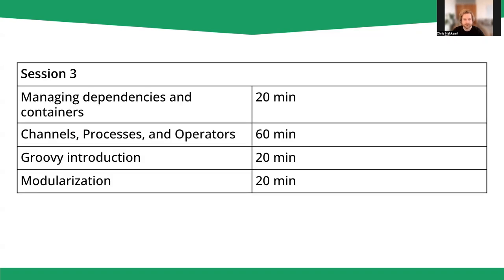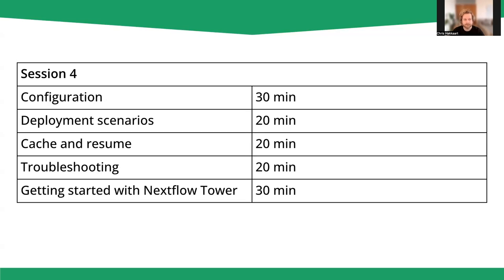In Session 3, we started to look at some of the things introduced in Sessions 1 and 2 in more detail. We looked at managing dependencies and containers, channels, processes, and operators. We gave a more thorough introduction to Groovy and looked at modularization of processes. In Session 4, we'll continue re-examining things introduced previously, such as configuration, deployment scenarios, the cache and resume, and troubleshooting errors with your pipelines. We'll finish off the session by getting started with Nextflow Tower.